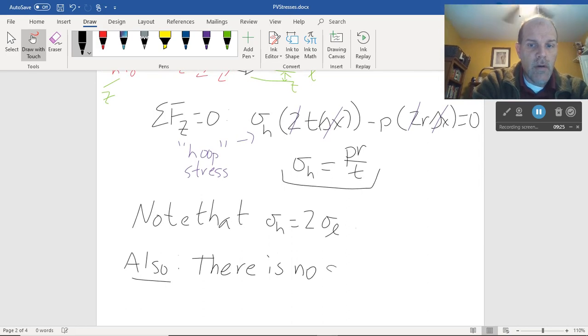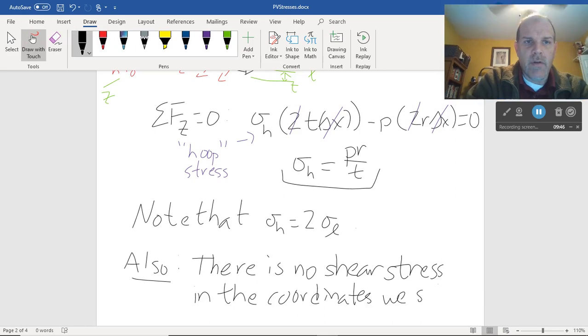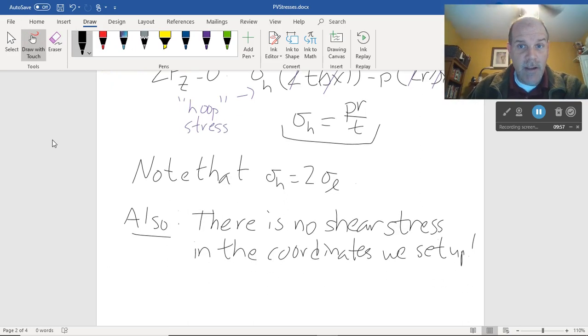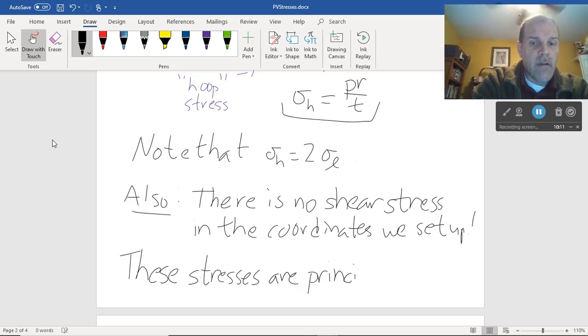There is no shear stress in the coordinates we set up, right? There's no mechanism in there by which to get a shear stress in these coordinate systems. What does that mean for the stresses that we found for sigma a for the sphere and sigma l and sigma h for the cylinder? We don't see shear therefore these stresses are principal stresses, okay?